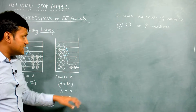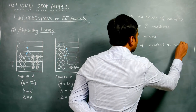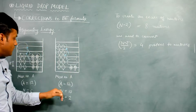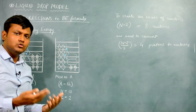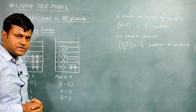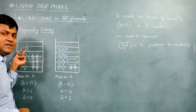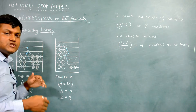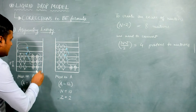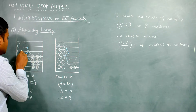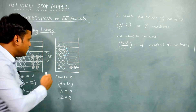To create an excess of N minus Z, or eight neutrons, we need to convert four protons into four new neutrons. We need to convert four protons to four neutrons, and we will then get an excess of eight neutrons in the new configuration. This basically increases the energies of the new neutrons. These protons were in a certain energy level, and the moment you convert them to neutrons, they rise up and occupy an energy level which is much higher compared to the original proton levels.